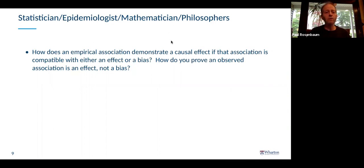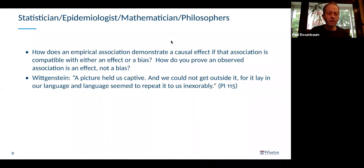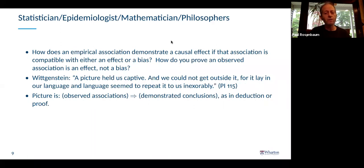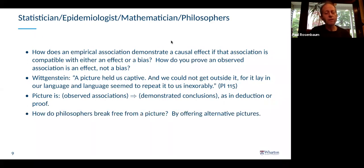How does an empirical association demonstrate a causal effect if it's compatible with either an effect or a bias? Wittgenstein said: a picture held us captive and we could not get outside it, for it lay in our language. The picture here is that observed associations demonstrate conclusions as in a deduction and proof — that the meaning of an observational study is clear on the day it's published. How do philosophers help us break free? They offer alternative pictures, not as substitutes but to reflect that there are multiple perspectives and we need not think within the framework of the first picture.